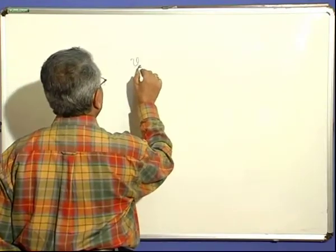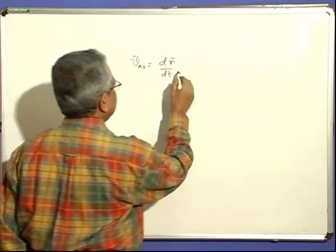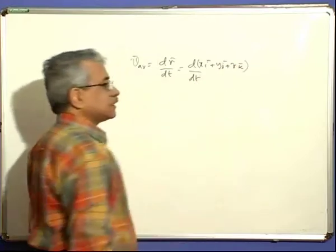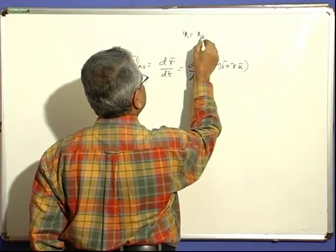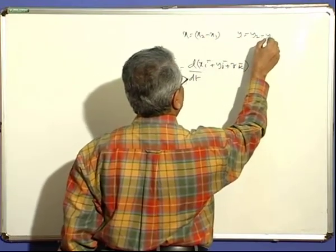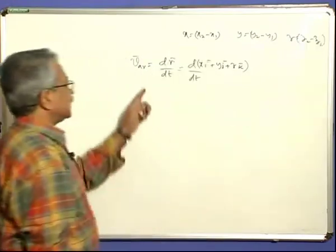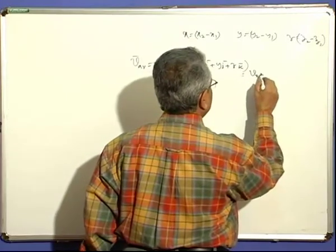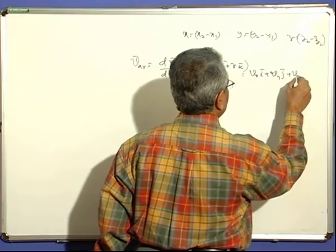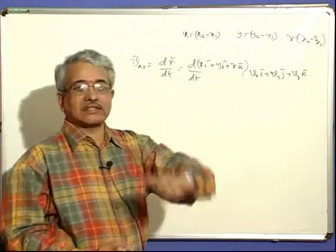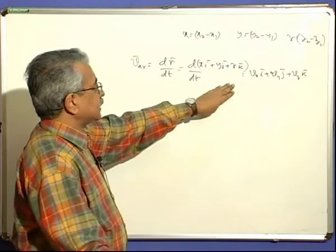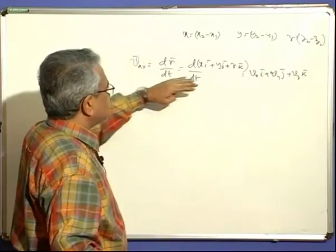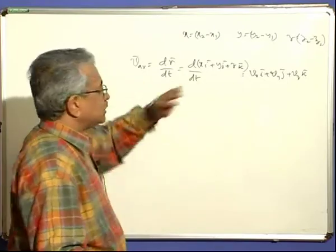We can write the average velocity as dr by dt. Here dr by dt means d of (xi plus yj plus zk) by dt, where x means x2 minus x1, y means y2 minus y1, and z means z2 minus z1. Once you know the position vector, you can differentiate the components of the position vector to get the velocity vector. What you get from this is vx i plus vy j plus vz k directly. This is average velocity. Instantaneous velocity can also be obtained depending upon the equation given.